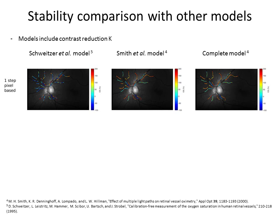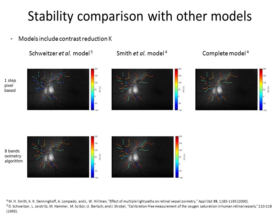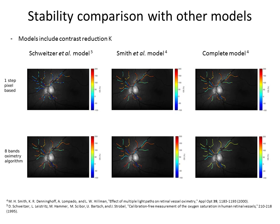Now you will see what happens once we apply the 8-band oximetry algorithm with all the steps. In this case, it improves, although there is still some variations around the vessel. In this one, we have a better improvement, although we have very big variations over here and there and there. And the last one, we basically don't see any variations.